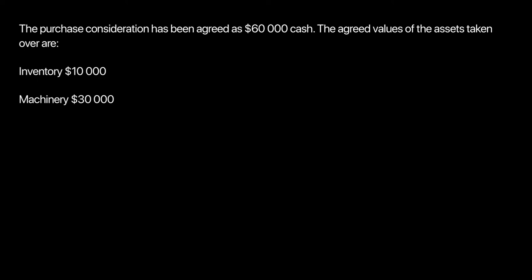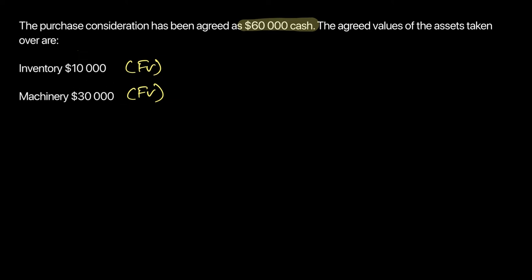The purchase consideration has been agreed at 60,000, to be paid in cash. So AJ Limited has agreed to pay 60,000 to buy Umar's business. Now these are the fair values that AJ is placing: AJ says the inventory is worth 10,000 — not what Umar said — and machinery is worth 30,000. So AJ is giving machinery a higher value of 30, but inventory a lower value of 10. That's the value AJ Limited is using.